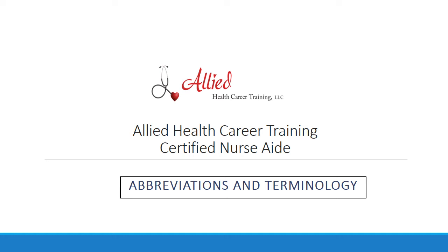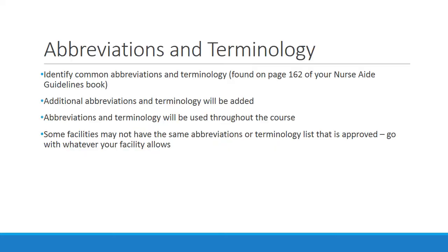Welcome back. Today we are going to go over some common abbreviations and terminology, including the different members of the healthcare team. In this section we will identify some common abbreviations and terminology, and the common ones are found on page 162 of your nurse aid guidelines book. We will also add some additional abbreviations and terminology, which will be used throughout the course and whenever you are practicing as a CNA.